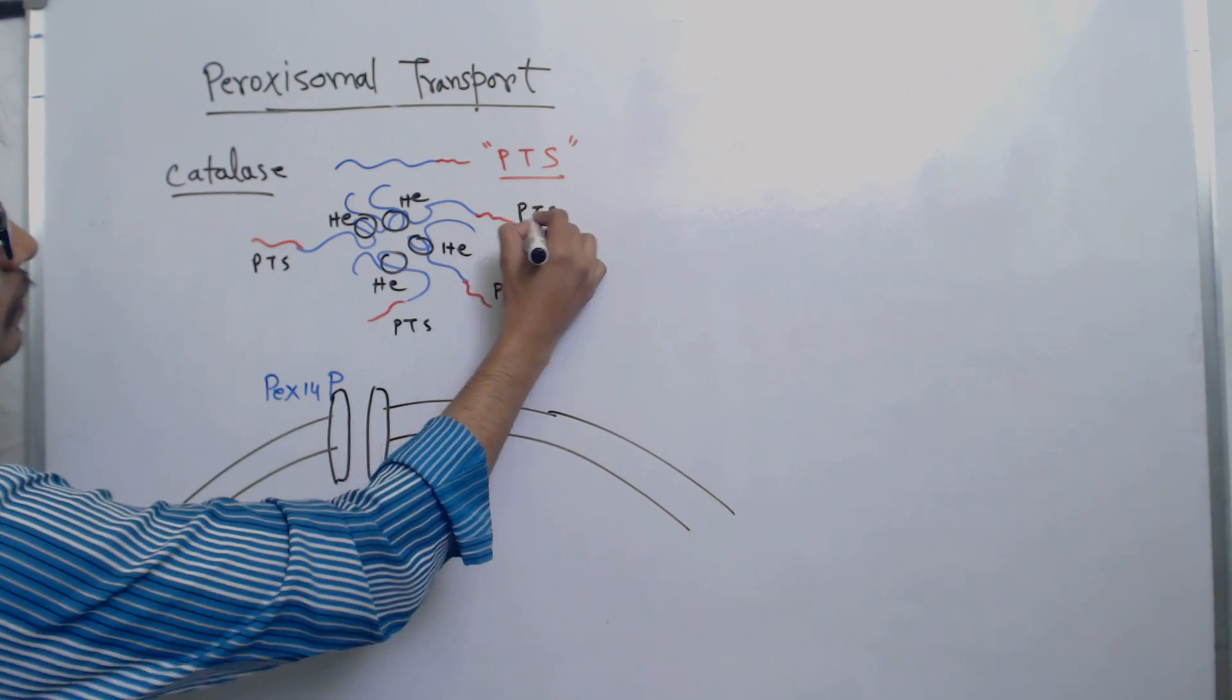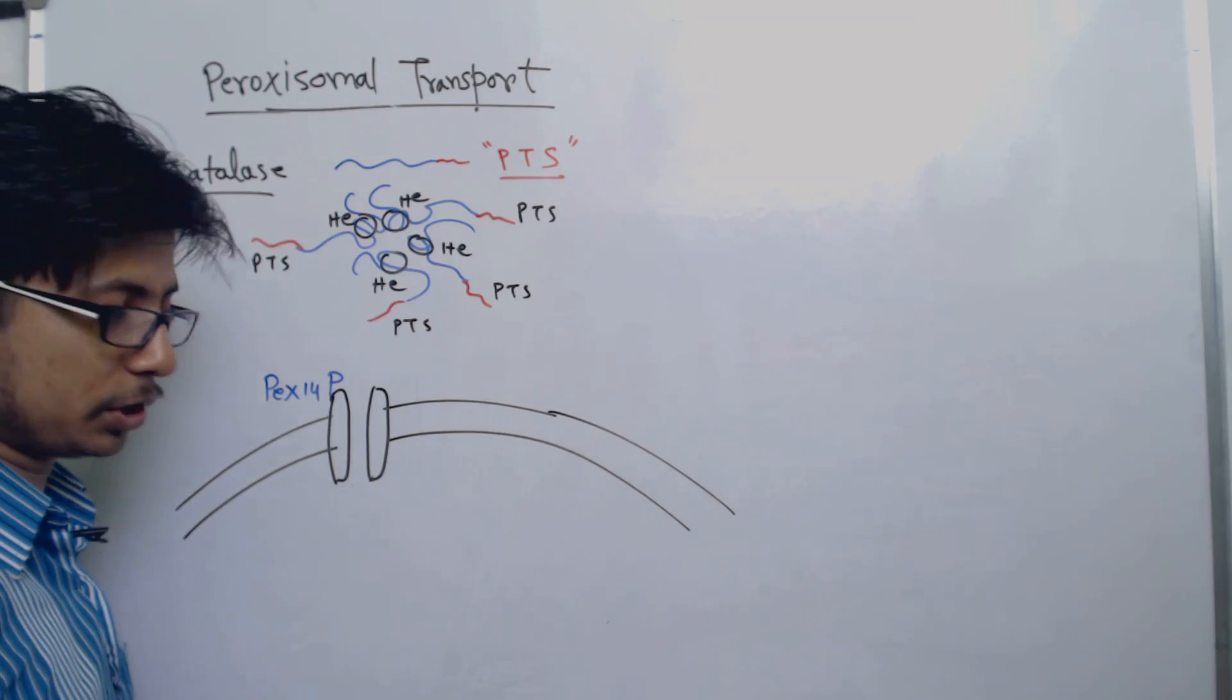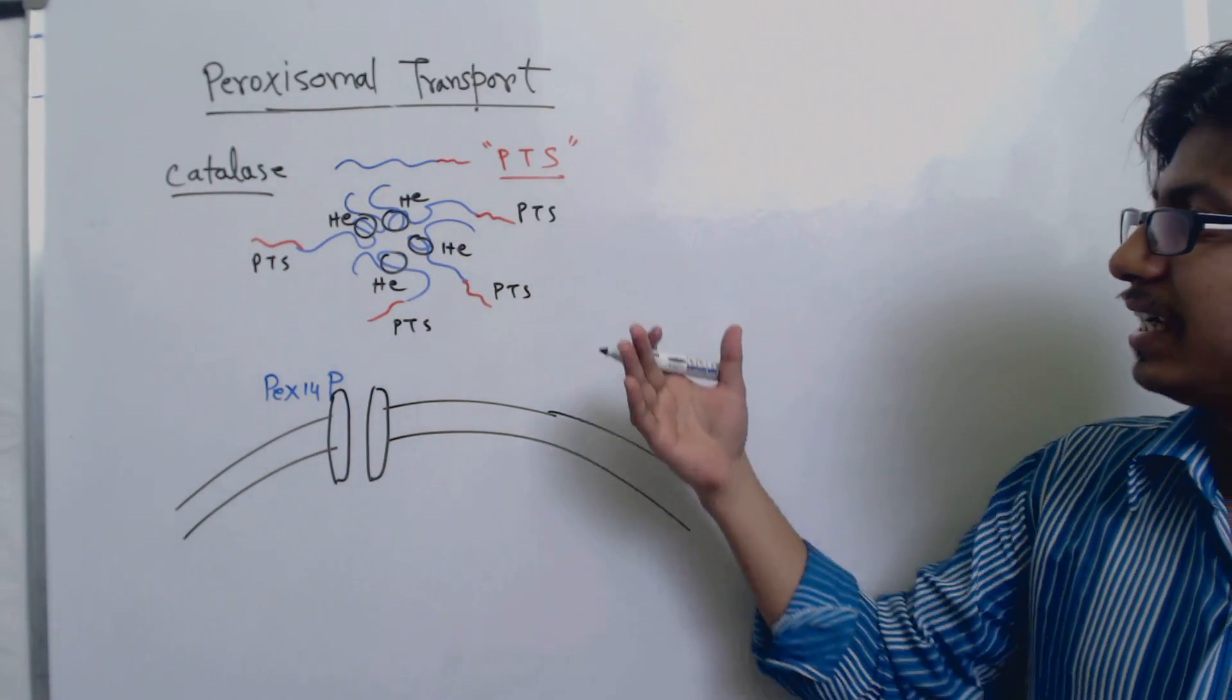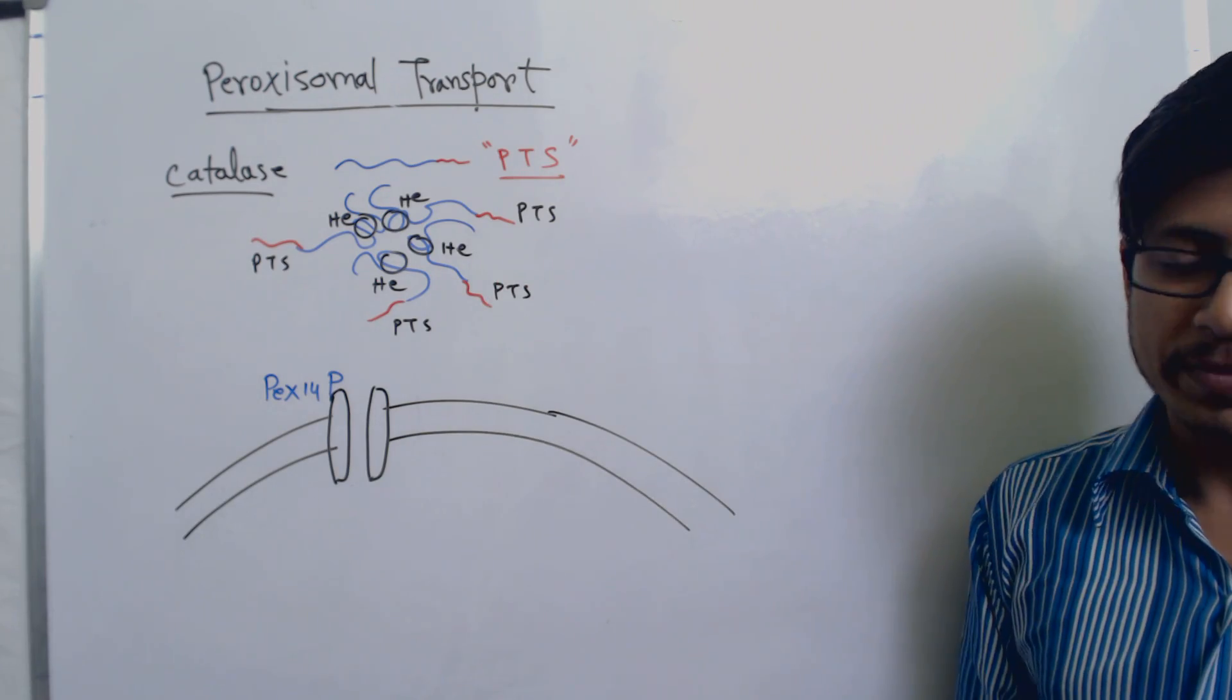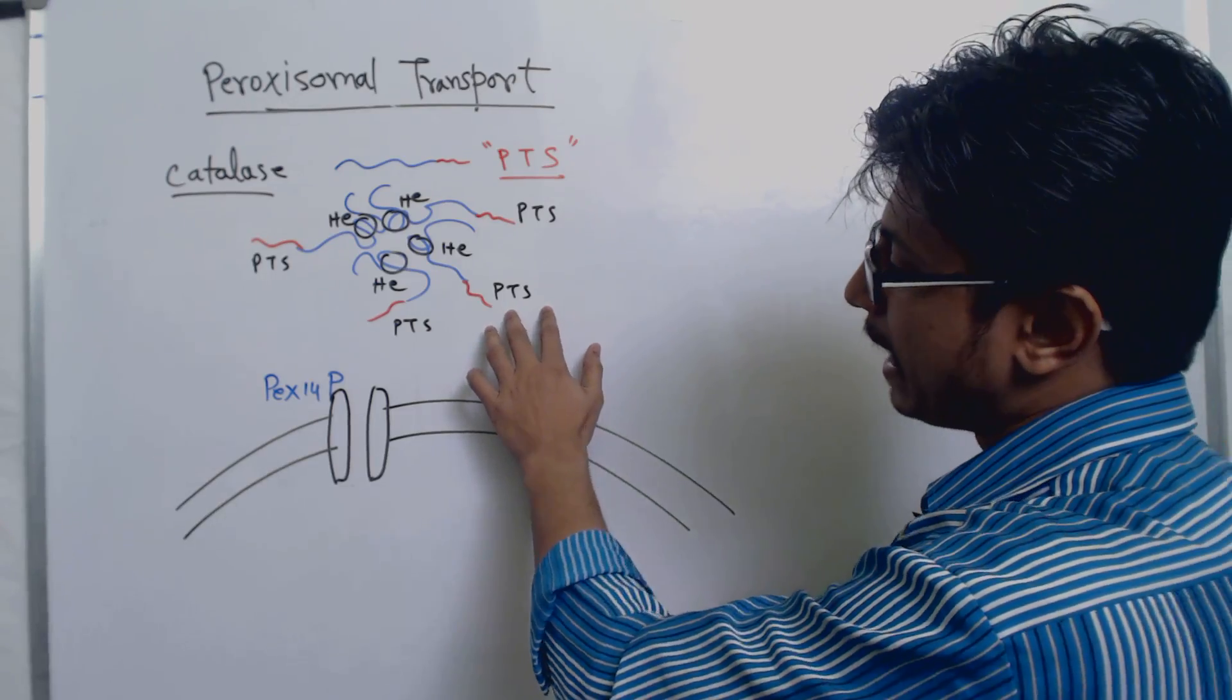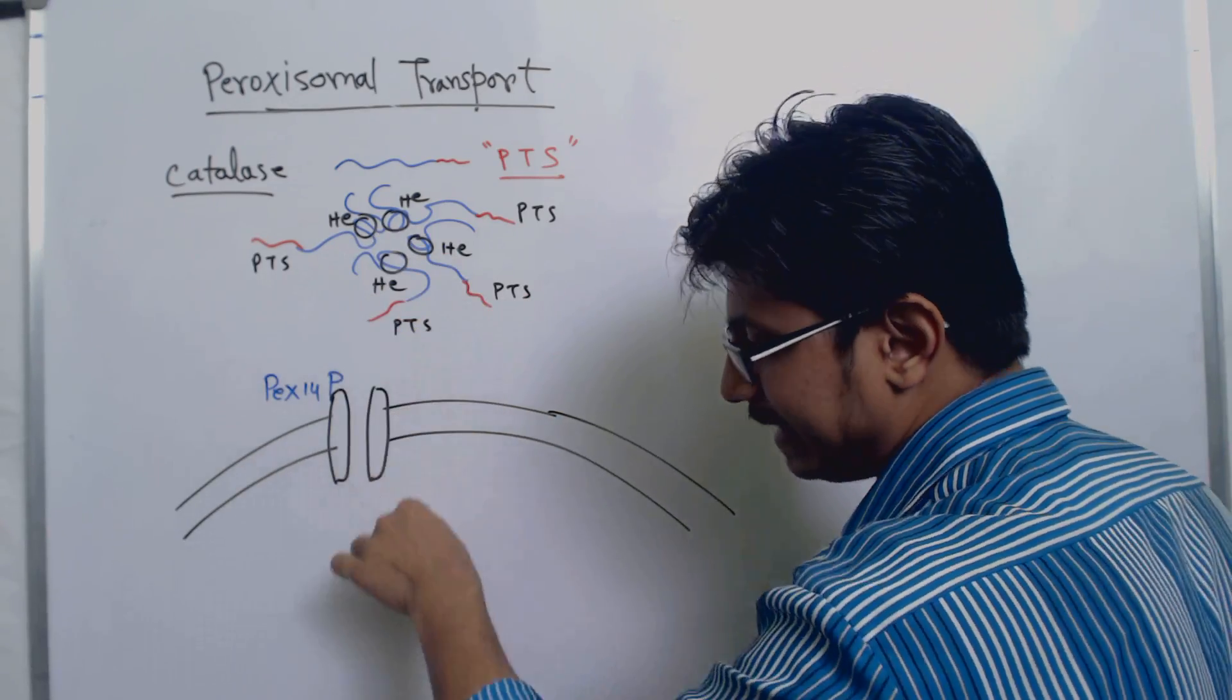The whole process of delivery of proteins inside the peroxisome is mediated by PTS and PTS receptor protein, known as PTS1R. This PTS receptor protein has a cycle of moving in and out of the peroxisome.